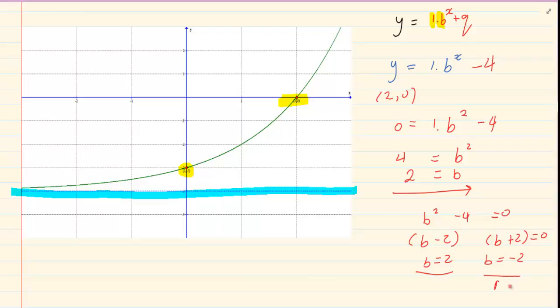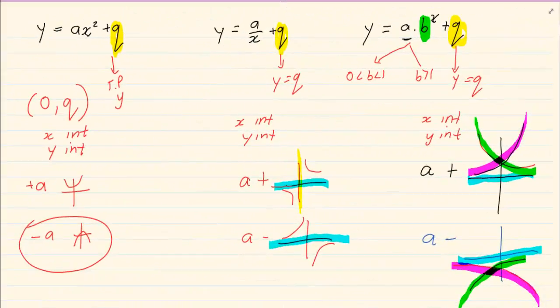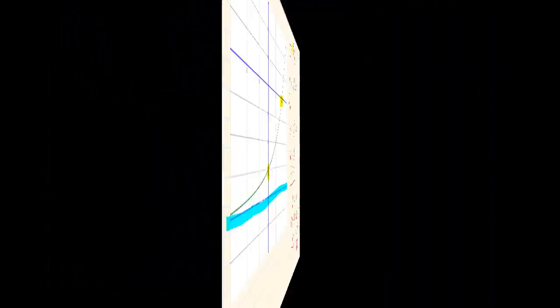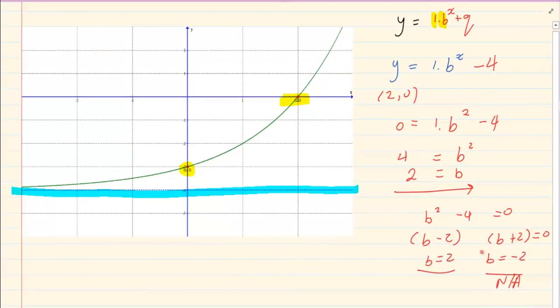But why am I not taking this one? Because if you remember, when we started with graphs, we said that exponential graphs are greater than 0. And you can see they never into the negative. Therefore, this one would be not applicable.